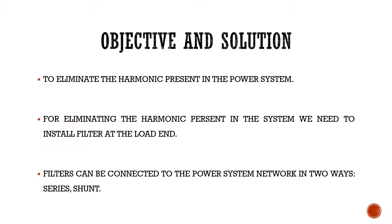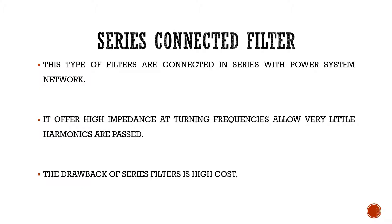We are going to see about the filter and working of the active power filter. The series connected filter — the name series itself denotes that the filter is connected in series connection with the power system. This kind of filter offers high impedance at tuning frequency, thus reducing the harmonics. It is capable of compensating the harmonic present in the system and allows only a lesser amount of harmonics to be passed to the power system.